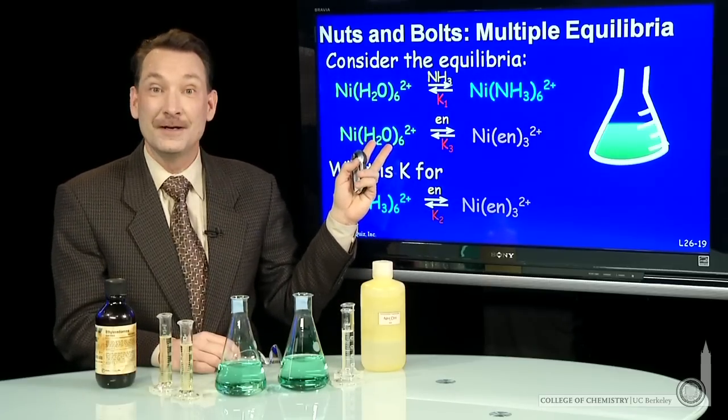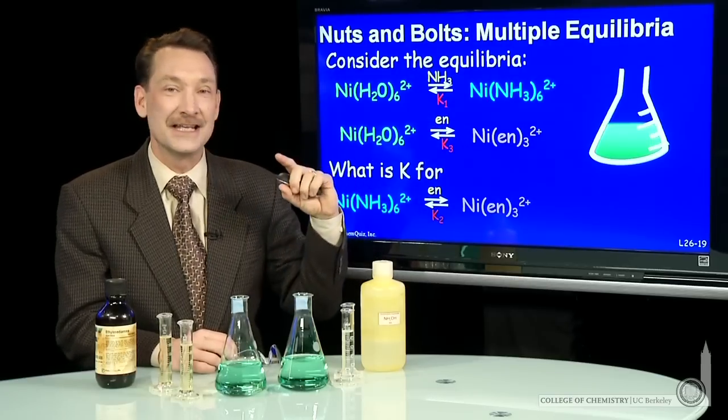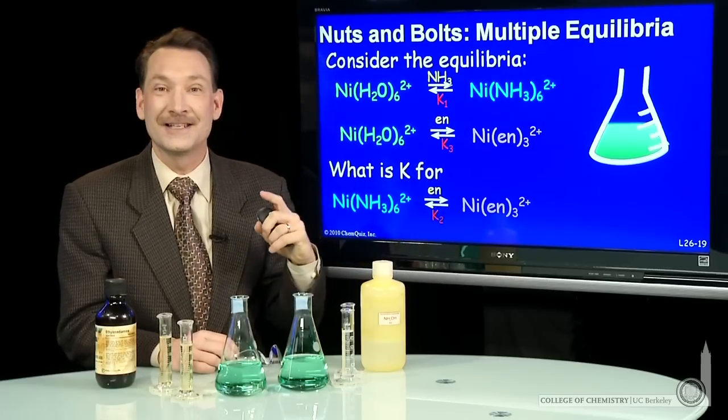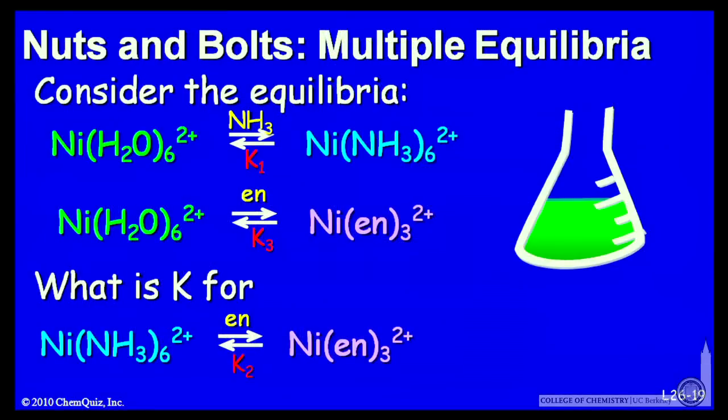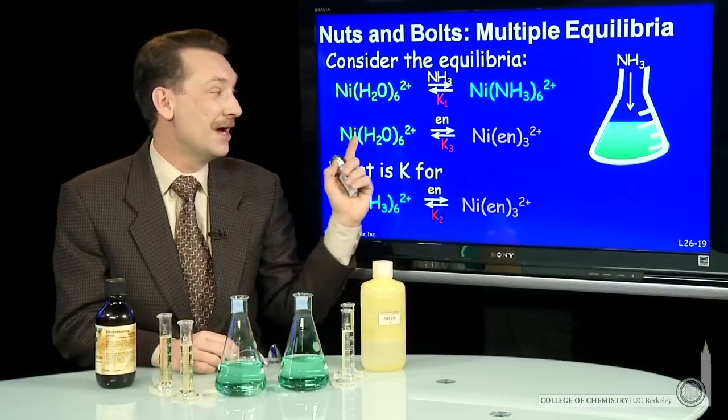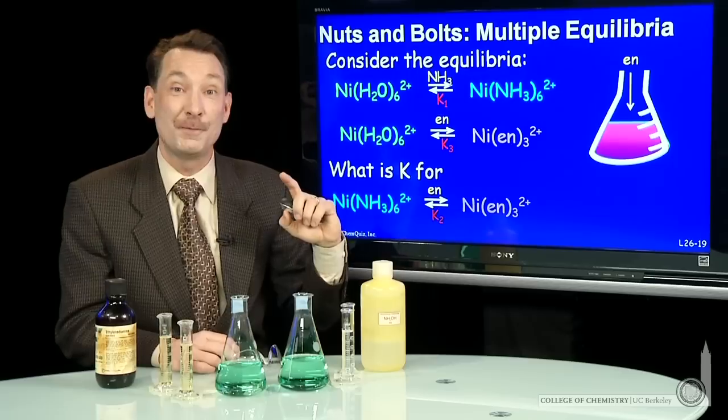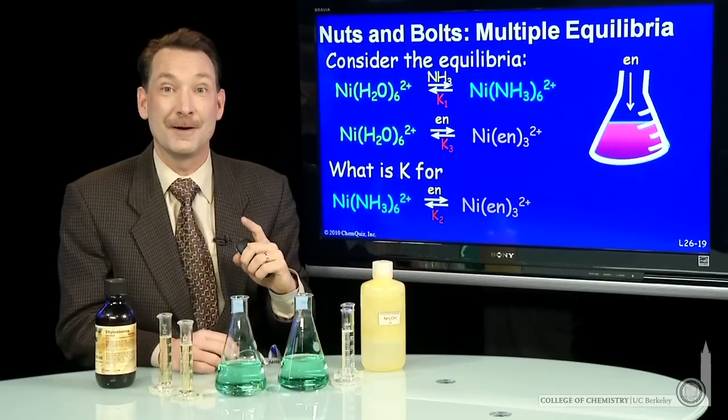Here's that same hydrate reacting with ethylenediamine, abbreviated En, to form an ethylenediamine complex. Both reactions proceed with Ks greater than 1. If I add ammonia to my green solution, I'll get a blue ammonia nickel complex. If I add ethylenediamine to the green hydrate, I'll get a purple ethylenediamine complex.